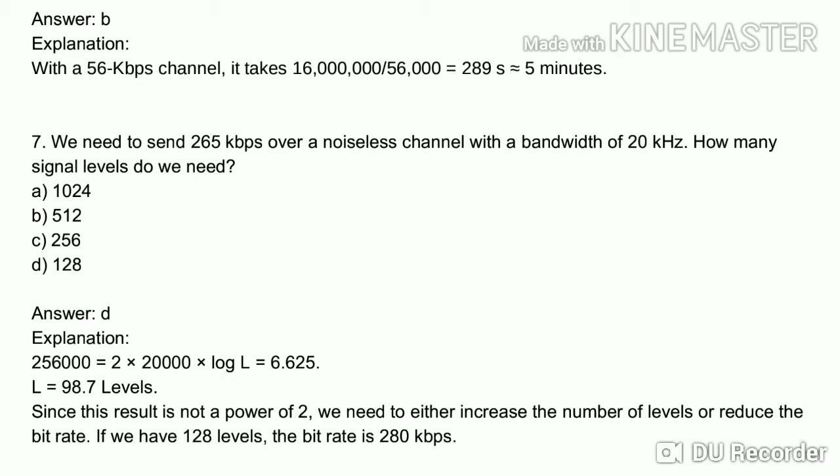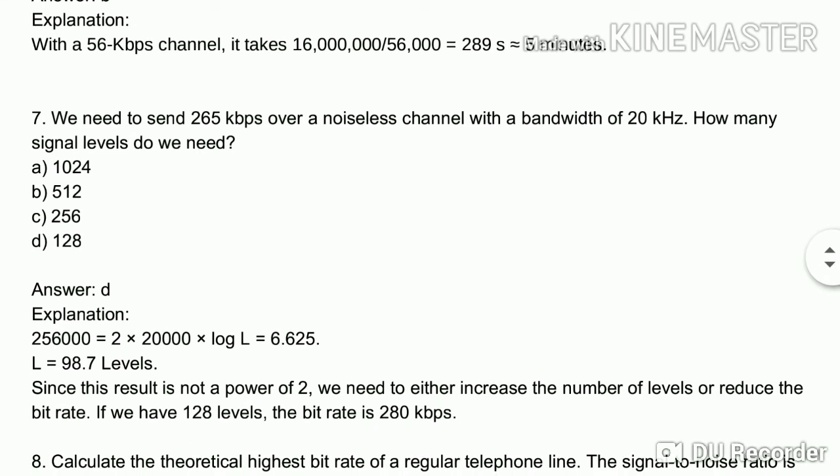Seventh question: we need to send 265 kbps over a noiseless channel with a bandwidth of 20 kHz. How many signal levels do we need? Since this is a noiseless channel, we use the Nyquist formula. The formula is: R = 2B × log₂(L).